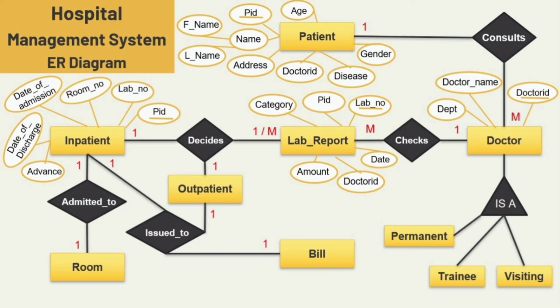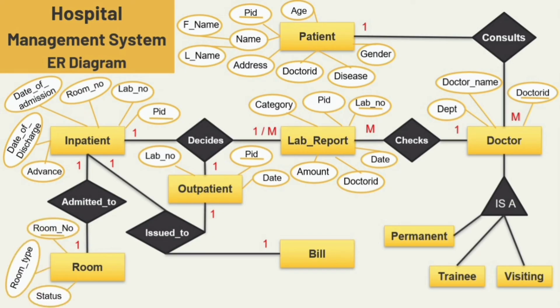For the inpatient entity I have added six attributes: patient ID, lab number, room number, date of admission, date of discharge, and advance. For the outpatient entity I am adding three attributes: patient ID, lab number, and date. For the room entity the attributes are room number, room type, and status — where status indicates whether the room is available or not, and room number is the primary key.